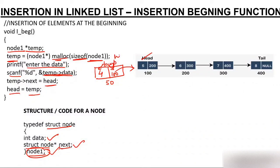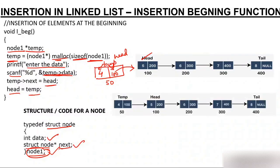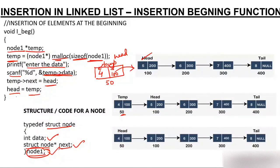Finally, head = temp. temp holds 50, so head now becomes 50 — head moves from the old first node to our new node. As shown in the diagram, 4 is now the first node pointing to the rest of the list. This is what insert beginning is all about. I've tried my best to explain everything very clearly.